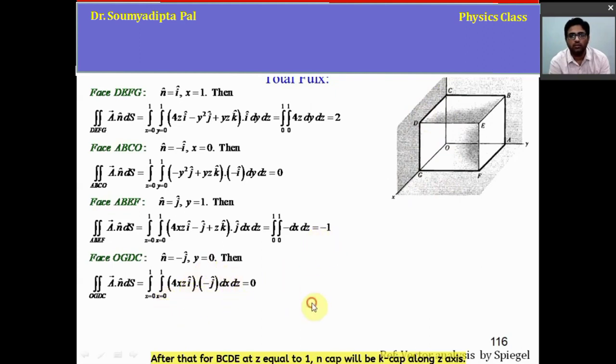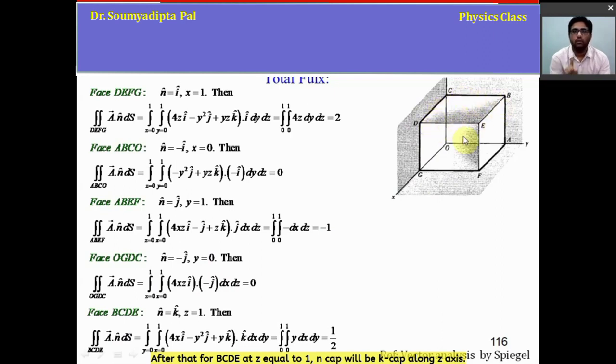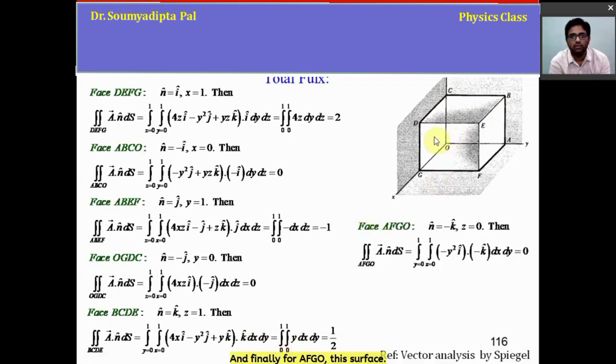After that, for BCDE at z equal to 1, n cap will be k cap along z axis. Then we get this value. And finally, for AFGO, this surface,